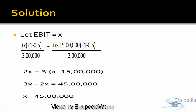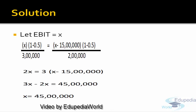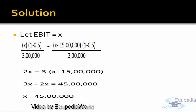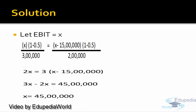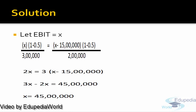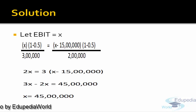Assuming EBIT is equal to x, EPS in Plan A — the equity plan — is x less tax portion divided by 3 lakh number of equity shares. This EPS is equal to EPS computed in the debt-equity plan, where I also reduce the interest portion, divided by 2 lakh. This gives the equation: 2x = 3x minus 45 lakh, so x equals 45 lakh.